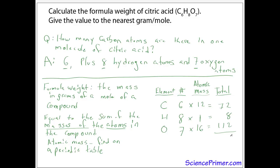We'll now sum these. 8 plus 2 plus 2 is 12, carry the 1. 7 plus 2 is 9, 192. So the formula weight of citric acid to the nearest gram per mole is 192 grams per mole.